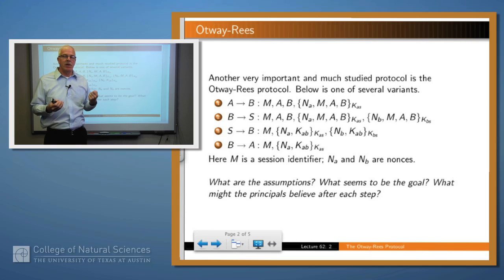What's the idea here? Notice in Needham-Schroeder, A originally spoke to S, but in this case A is telling B: I want to talk to you, and here's a piece of information which you can send on to the key server to generate some keys for us.